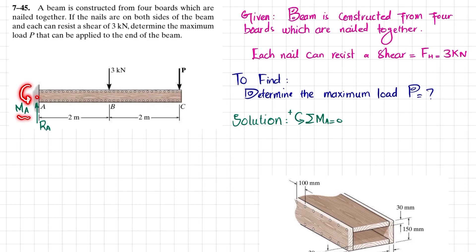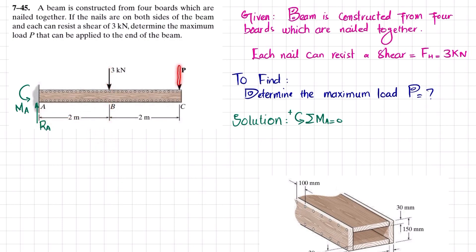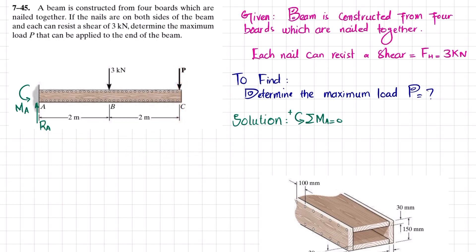About point A: the reaction moment Ma is counterclockwise so it is positive. The 3 kN force at a perpendicular distance of 2 meters produces a clockwise moment, so it is negative. The load P at a perpendicular distance of 4 meters is also clockwise, so it is negative. Setting the sum of moments to zero: Ma minus 3 times 2 minus P times 4 equals zero.